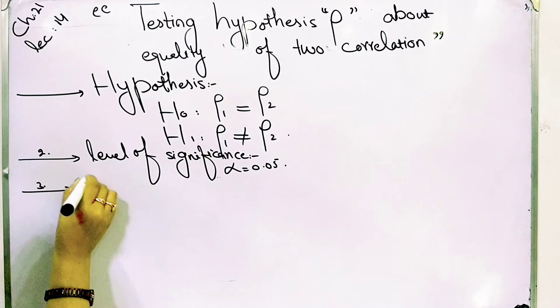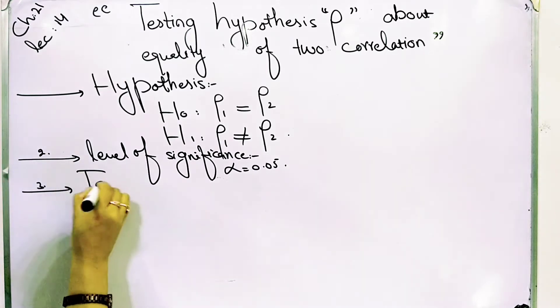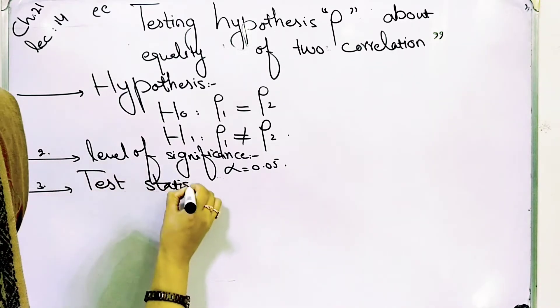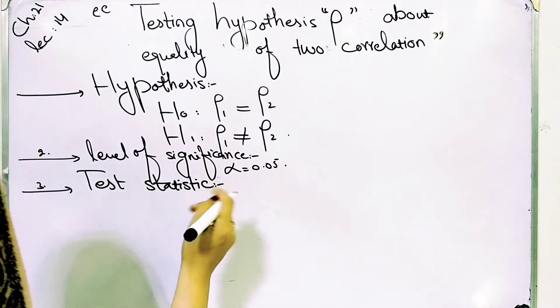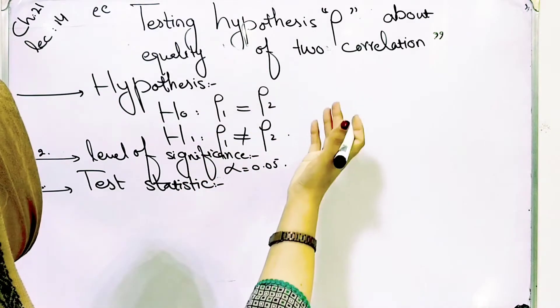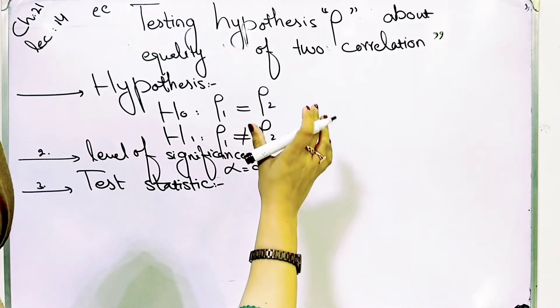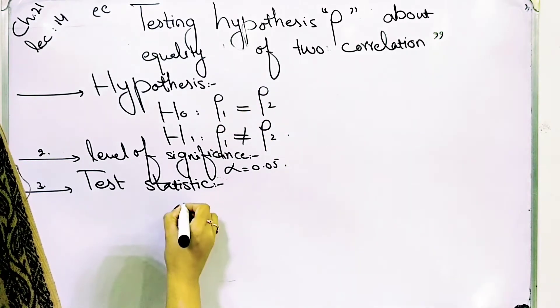Third, you have to do test statistics, in which you have to clarify your formula. Because we have the situation about the equality of two correlations, we have to use this formula.